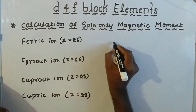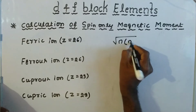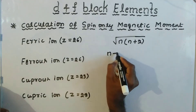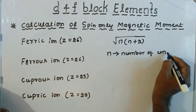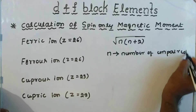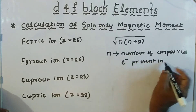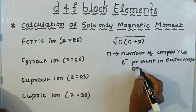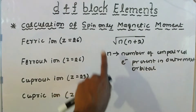The formula for spin only magnetic moment is: μ = √(n(n+2)), where n means the number of unpaired electrons present in the outermost orbital. This is the formula to find out the spin only magnetic moment. Note it down.